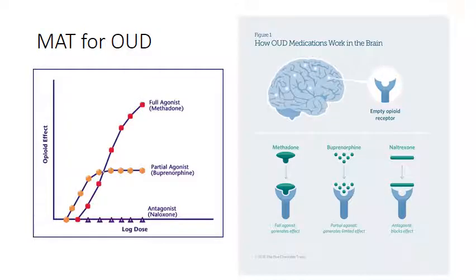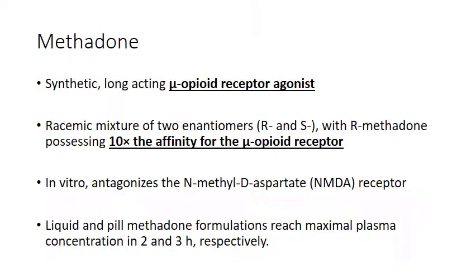Medication-assisted treatment for opioid use disorder includes three agents: methadone, buprenorphine, and naltrexone. Methadone is a full agonist; buprenorphine is a partial agonist; and naltrexone is a competitive antagonist. Methadone is a synthetic, long-acting opioid receptor full agonist — a mixture of two enantiomers, with the R-enantiomer having ten times the affinity for the mu-opioid receptor. It also antagonizes the NMDA receptor. Available in liquid and pill forms, it reaches plasma concentration in two to three hours. Liquid forms are used in opioid treatment programs (OTPs).